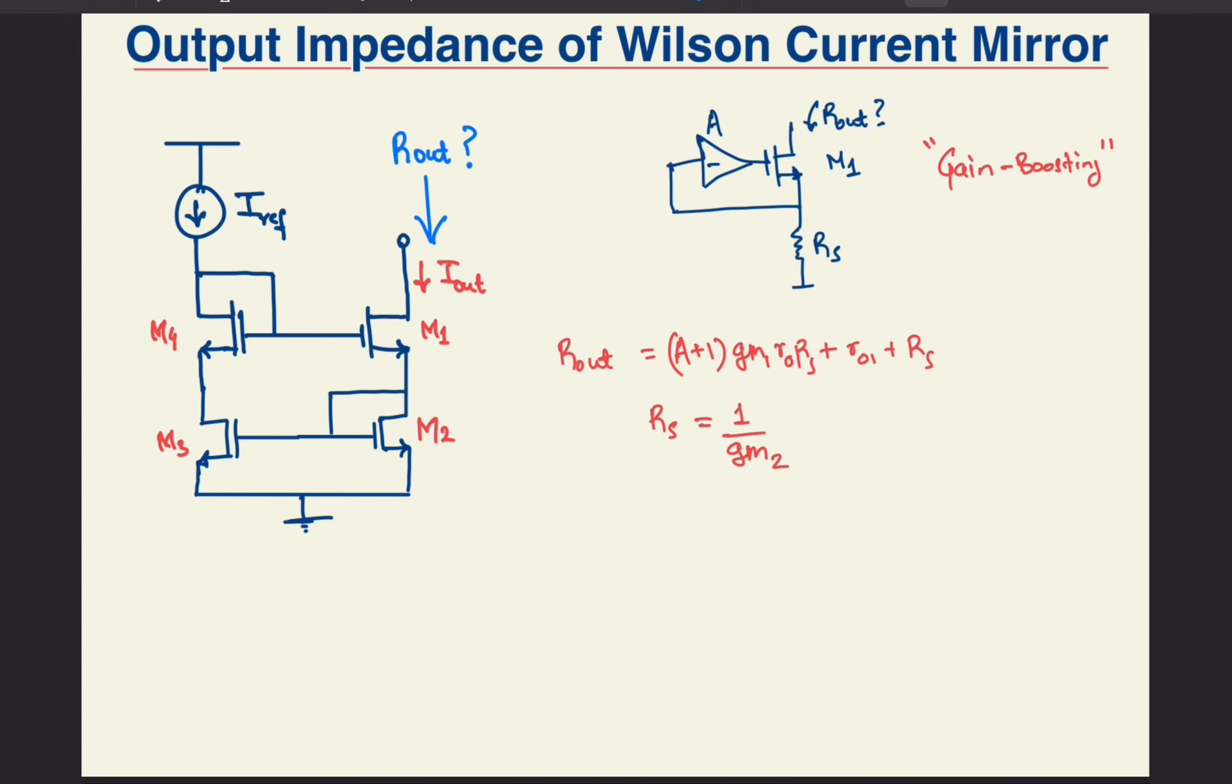Here, RS is the looking down impedance from the source of M1, which is approximately 1 over GM2. Note that RS is the looking down impedance and not the total impedance at the source of M2. The total impedance would be much lower because of the negative feedback in place. A is the magnitude of the gain of the amplifier. It is GM3 times RO3 in our case.